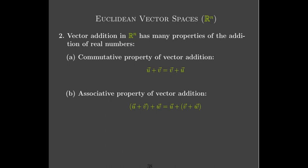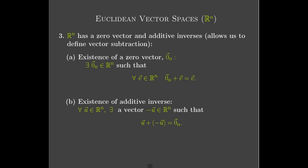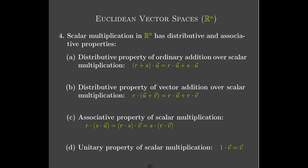The second group has to do with vector addition: you need a commutative property and an associative property. The third group has to do with the zero vector and opposites. You need a zero vector — in Rn it's the vector whose components are all zeros — with the essential property that adding it to any vector leaves that vector unchanged. And you need an additive inverse so that adding a vector to its opposite gives the zero vector.